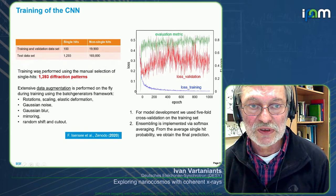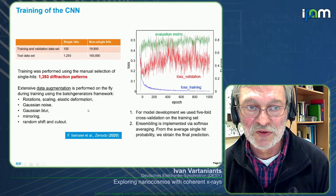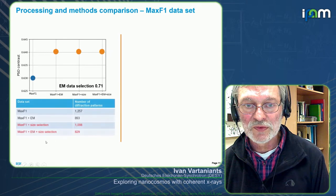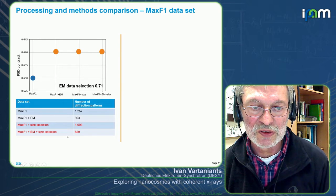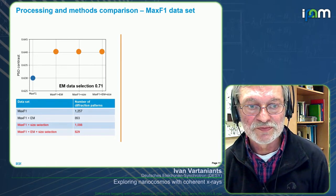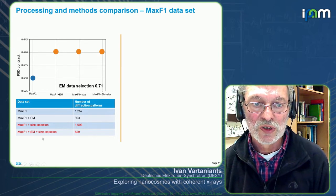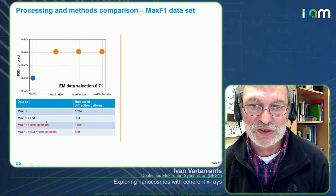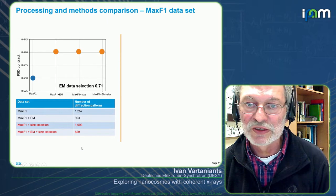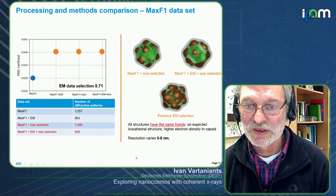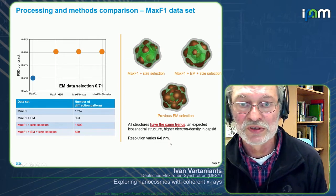After this we got 1,393 diffraction patterns and went through an extensive data documentation step. After a few attempts we collected different numbers of diffraction patterns using different strategies, in combination with size selection and classification. Interestingly, from all these classifications we got more or less the same result, which was encouraging. The resolution in these cases was varying from six to eight nanometers.